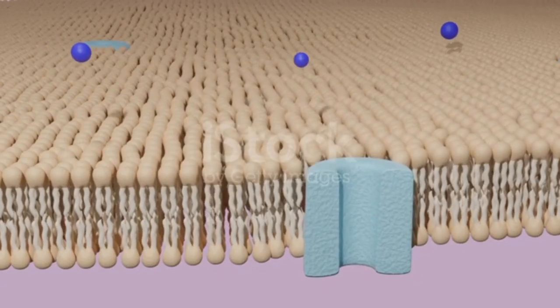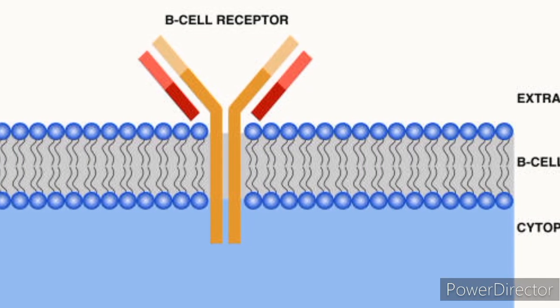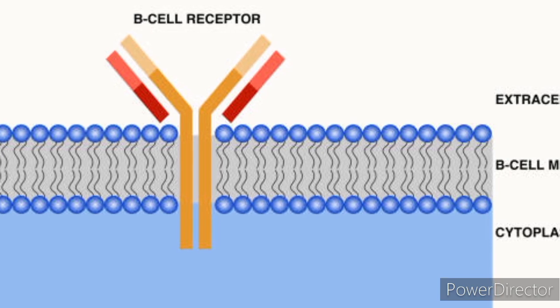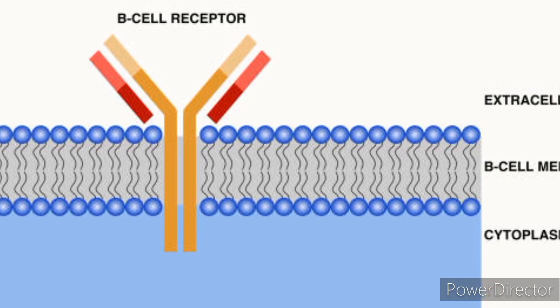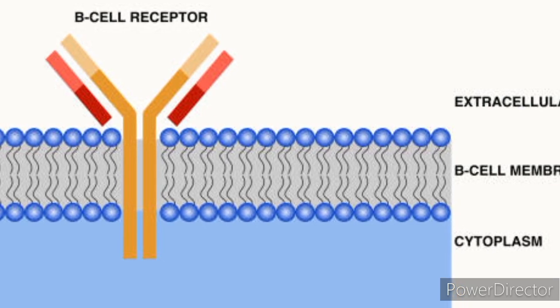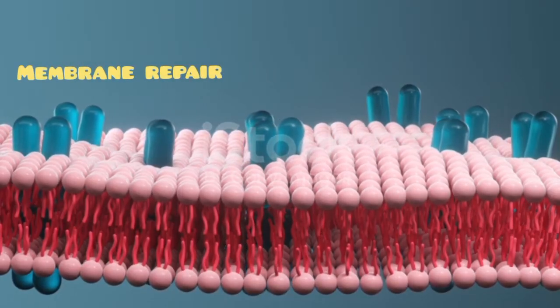Receptor proteins: These proteins on the plasma membrane's surface bind to specific molecules (ligands) to initiate cellular responses or signal transduction pathways inside the cell.